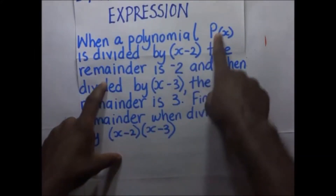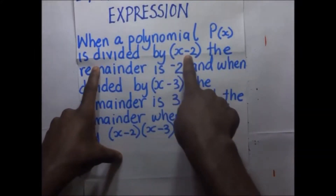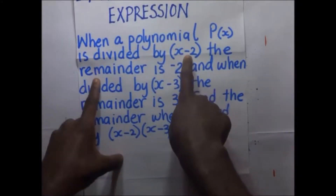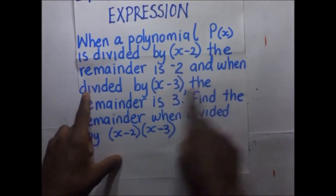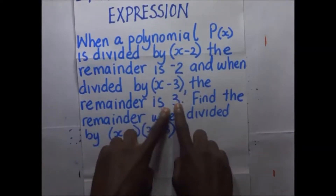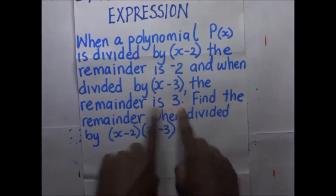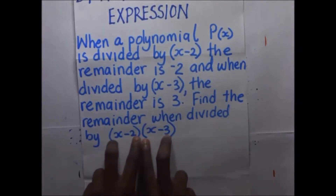When the polynomial P of X is divided by X minus 2, the remainder is negative 2, and when it's divided by X minus 3, the remainder is 3. Find the remainder when it is divided by that product.